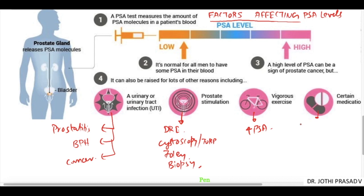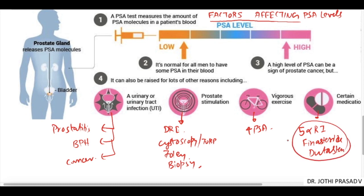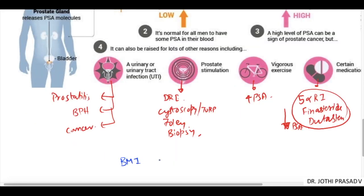Vigorous exercises and cycling are found to elevate PSA levels. Certain medications are also found to elevate PSA levels; however, 5-alpha reductase inhibitors such as finasteride and dutasteride are found to decrease PSA levels. BMI is surprisingly associated with decreasing PSA levels, probably due to hemodilution.